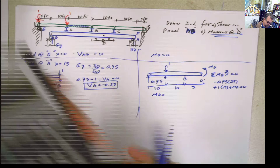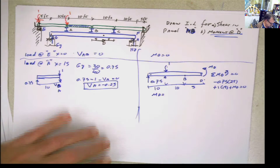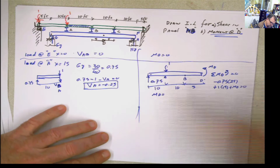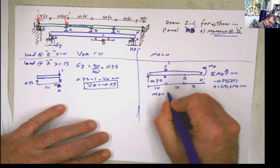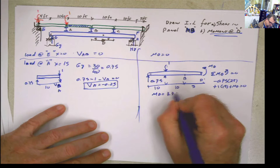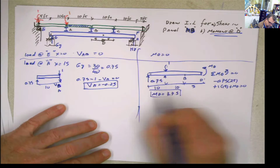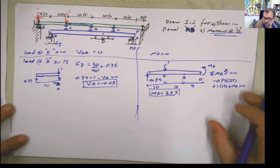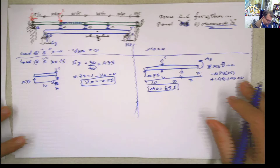So MD equals 0.75 times 25 minus 15, giving negative 3.75. Passing it to the other side, MD equals 3.75.